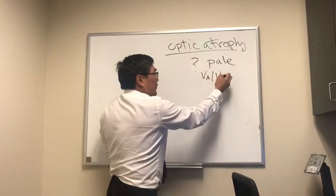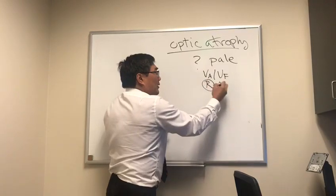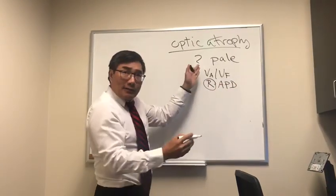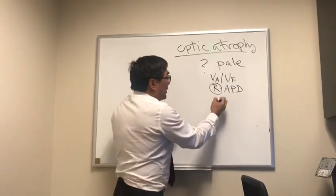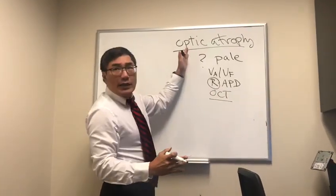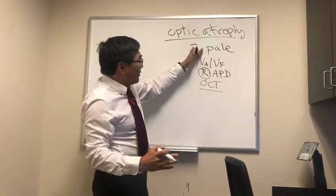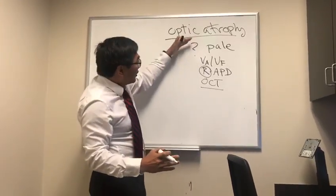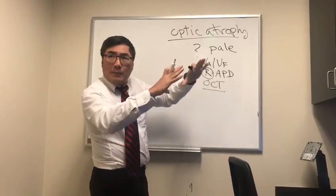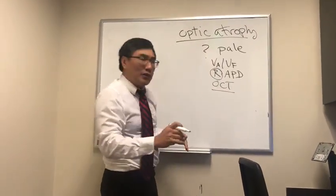We want to check the visual acuity and visual field. We want to look for the relative afferent pupillary defect, which may be absent if it's bilateral and symmetric. And we're going to do an OCT of the optic nerve to see if we can identify the nerve fiber layer loss that would prove this nerve is really pale versus just looking pale. The most common causes of it to look pale are peripapillary atrophy or pseudophakia, posterior chamber intraocular lens.